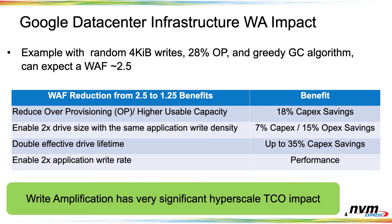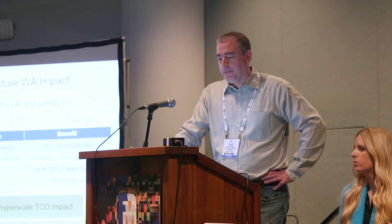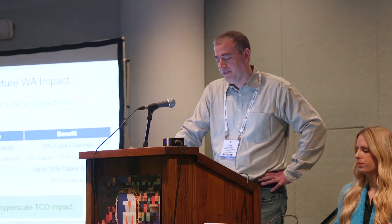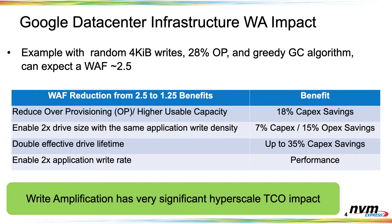This is a very simple example. If you have a random write workload with 28% over-provisioning and a greedy garbage collection algorithm — which means you pick the block with the fewest valid sectors to garbage collect — you can expect a write amplification of 2.5. If you could reduce that from 2.5 to 1, you could reduce the over-provisioning. Instead of wasting 28% on drive OP, you could significantly reduce that, get extra bytes, and save 18% capex on the SSD deployment.